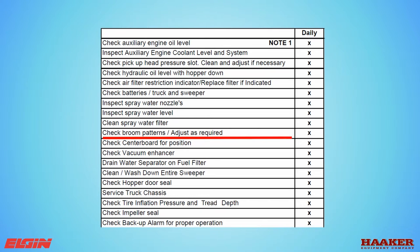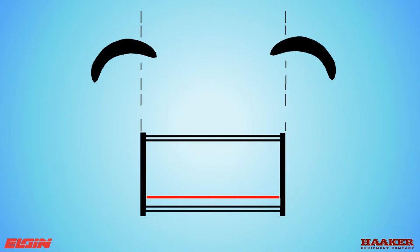Check broom patterns. Make a pattern on the ground by starting the brooms and letting them run for 30 seconds. Then turn the brooms off and pull forward enough to see the broom pattern that was covered by the drag shoes of the pickup head.